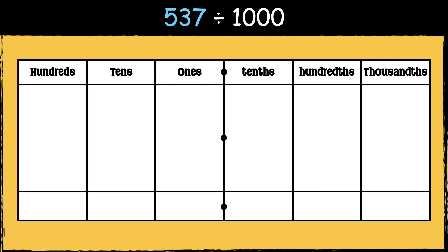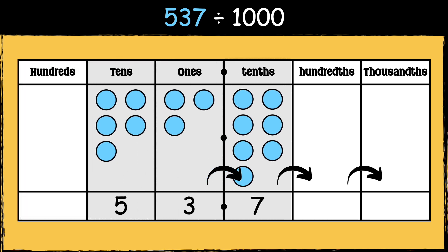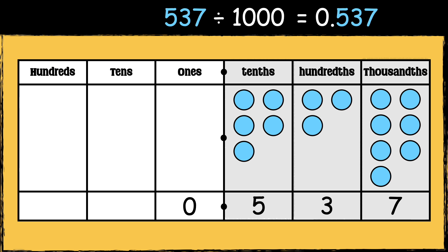Here's the last example: 537 divided by a thousand. All the digits need to move three places to the right, so 537 becomes five tenths, three hundredths, and seven thousandths. We need to use zero as a placeholder to show that there are no ones, so the answer is 0.537.